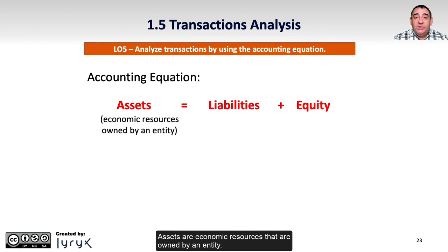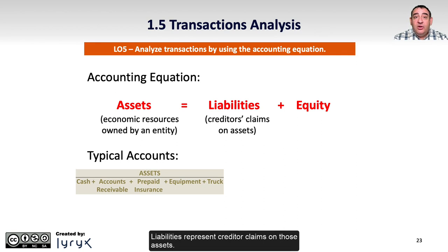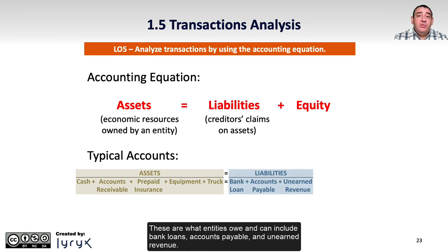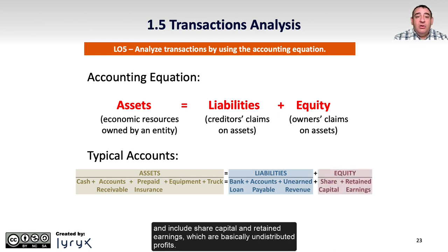Assets are economic resources that are owned by an entity. Examples can include cash, accounts receivable, prepaid insurance, equipment, and vehicles. Liabilities represent creditor claims on those assets — these are what entities owe and can include bank loans, accounts payable, and unearned revenue. Equity is the owner's claim on the net assets of the business and includes share capital and retained earnings, which are basically undistributed profits.